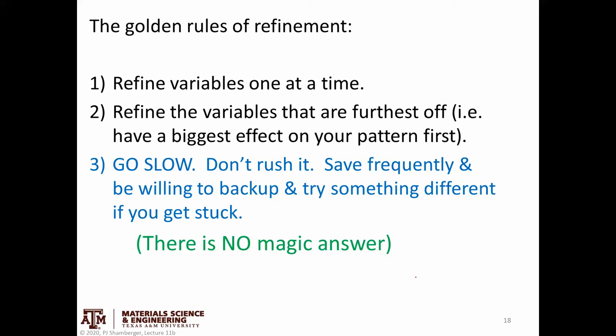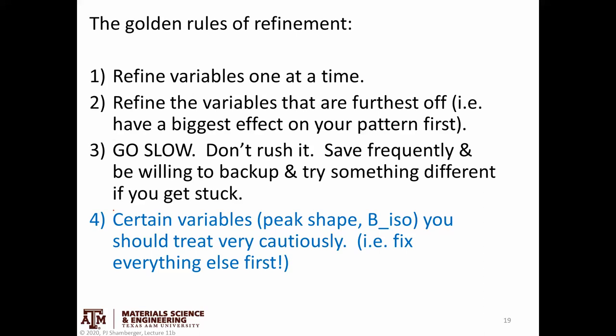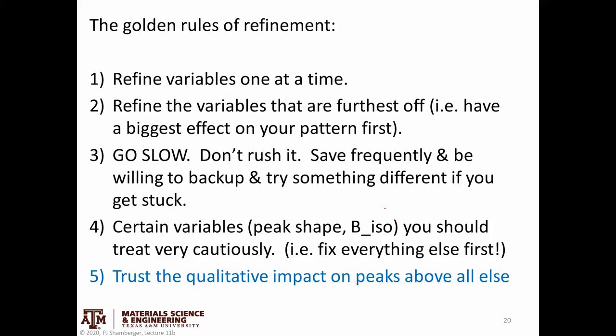If this was an easy black-box solution we wouldn't be talking about it — we'd all just put in our program and hit go. There are many commercial packages that are pretty robust, but it's important to understand what they're trying to do. Also, some variables — particularly thermal parameters like B-ISO or U-ISO for peak shape — have a greater tendency than other variables to go bad and cause problems, so be careful when working with those. And don't just look at the RWP number; look at what's happening to the peaks and how well you're fitting the observed peaks.